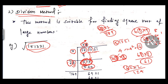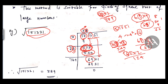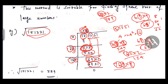The remainder is 69, bring down the last pair 21 to get 6921. Double 38 to get 76. Find a digit to combine with 76 such that the product is less than or equal to 6921. Trying 769 × 9 = 6921, which fits exactly. So the next digit is 9. Therefore, the square root of 151321 is 389. This is a very good method to find the square root of large numbers without a calculator.